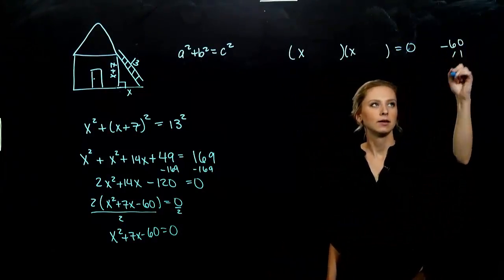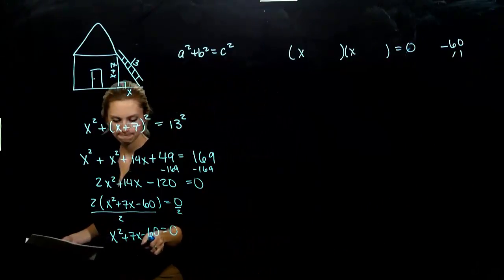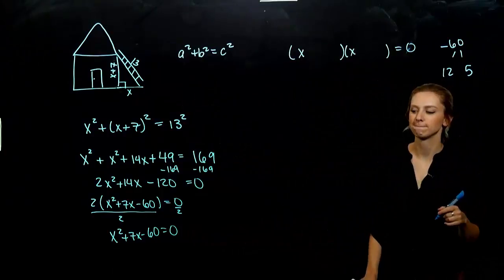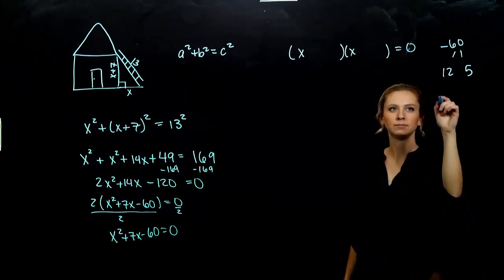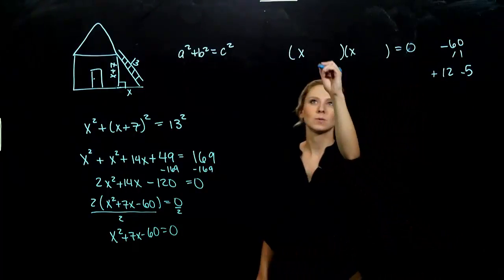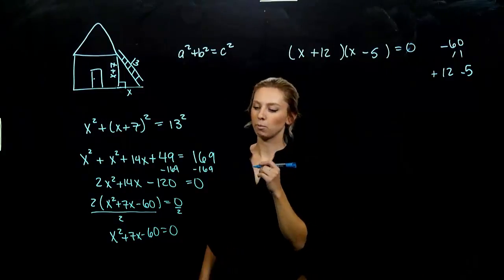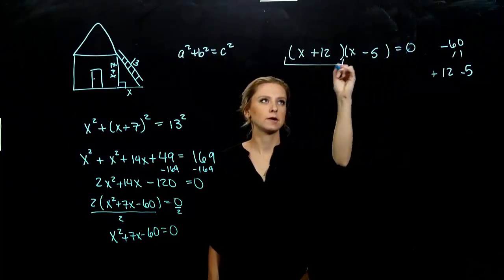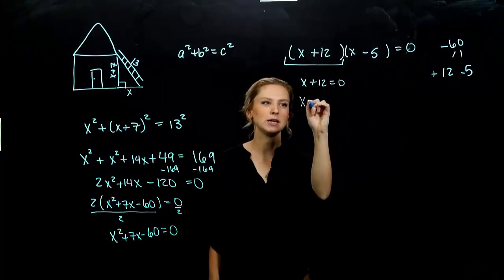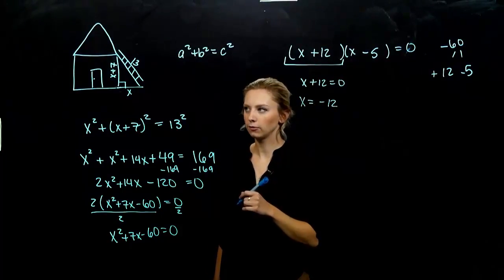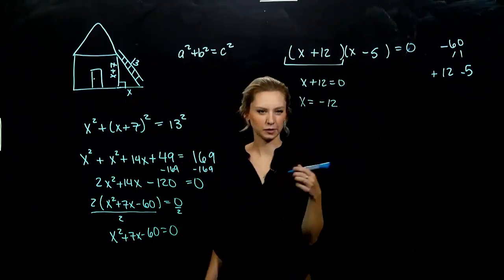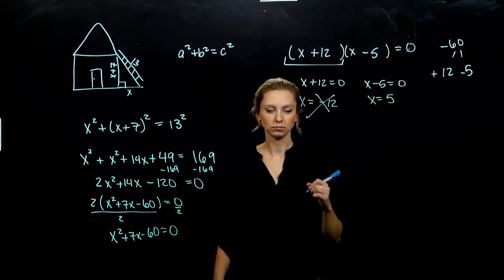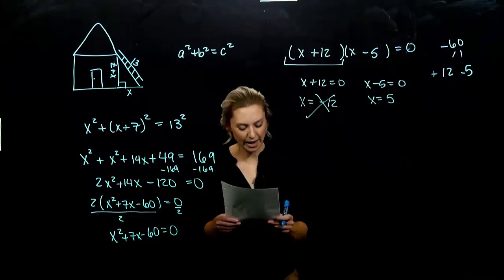I need to break up -60 into things multiplying to -60, adding to 7. What combo? 12 and 5 will get us there. Which one needs to be positive? The bigger one. The smaller one needs to be negative. Two things being multiplied are equal to zero, so either the first piece is equal to zero, which gives me -12. Can I have -12 for a distance on the ground? No. My other option is x = 5. That's reasonable.